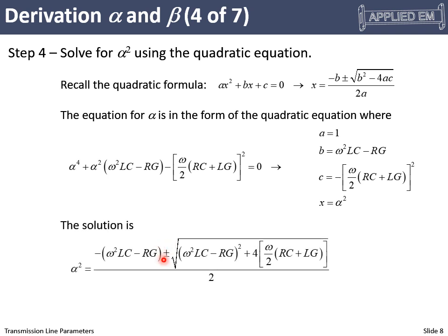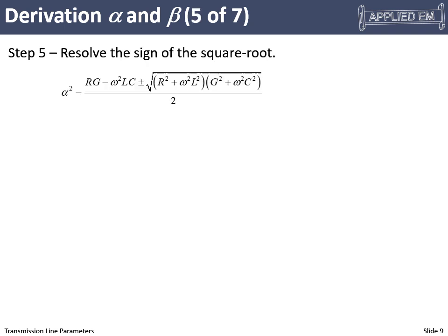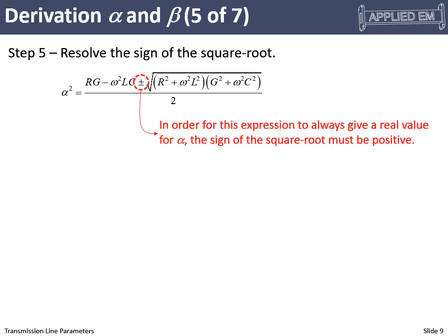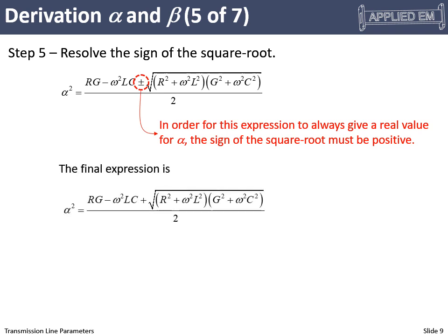We need to think about alpha: it has to be a purely real number. We currently have alpha squared, and in order for alpha to be purely real when we eventually take the square root, this expression cannot be negative. The only way to ensure that is to take the positive sign on the square root. So we go with the positive root, and that is our expression for alpha squared. We still need to take the square root of it, but for now we move on to beta.